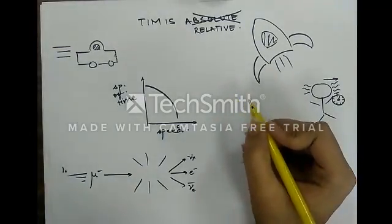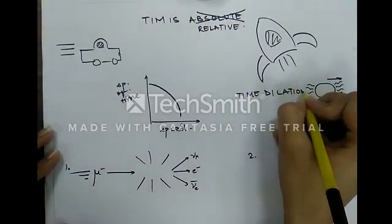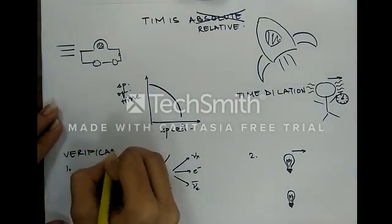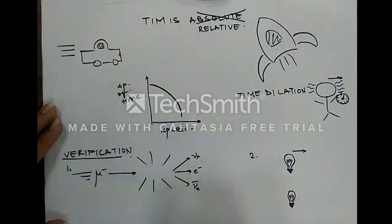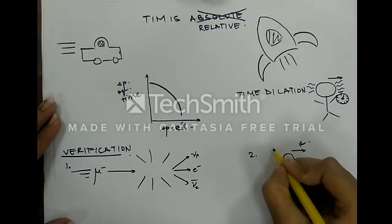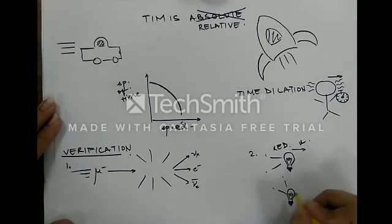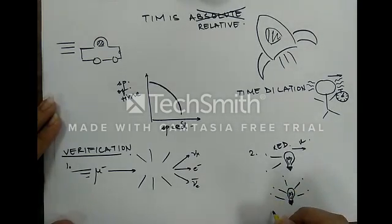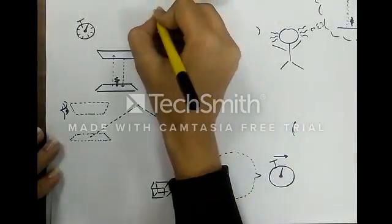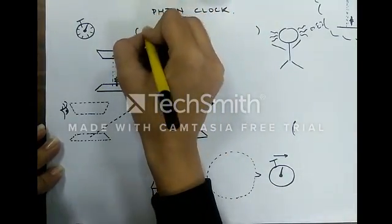And this delay in the moving clock is known as time dilation. There are various experimental verification for the same. The first being that this fast moving muon decays much slower and that a moving light source have much lower frequency than a light source which is at rest. Moving source being red and the stationary being violet. This can also be explained in terms of the photon clock experiment.